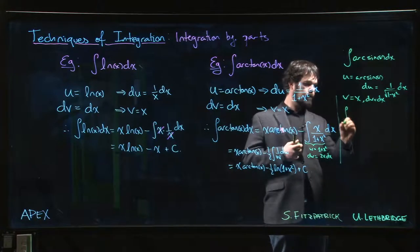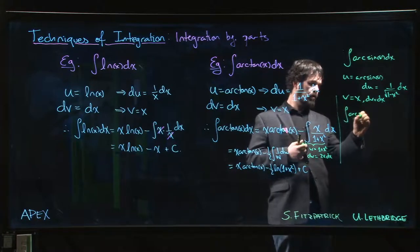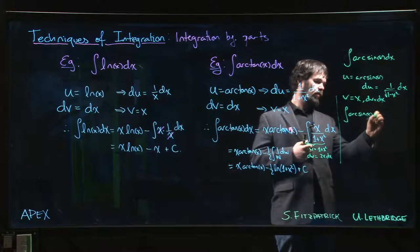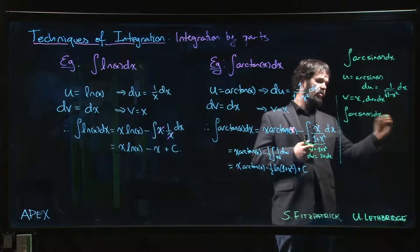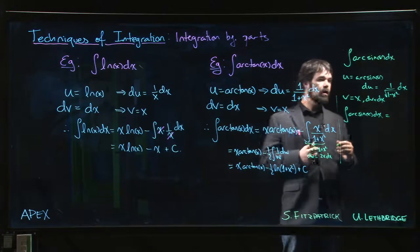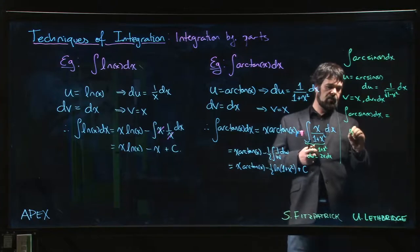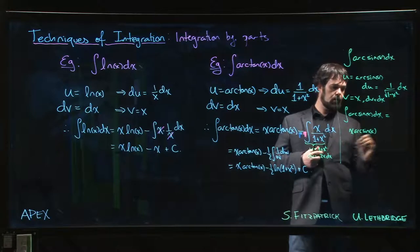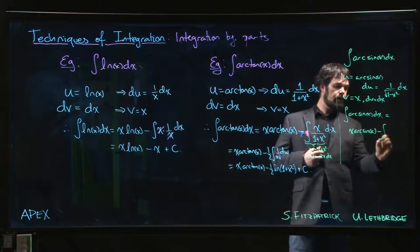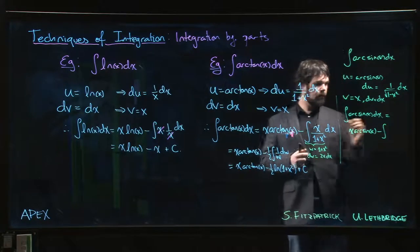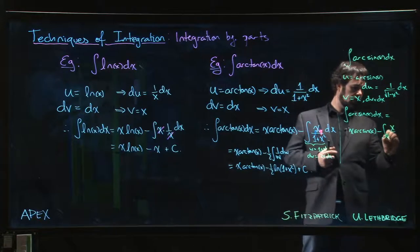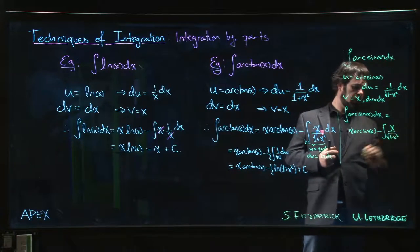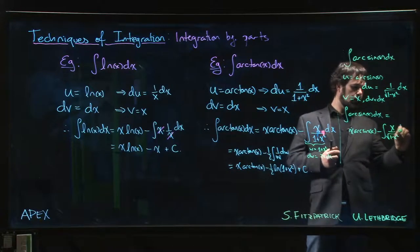And so if I do that, the integral arc sine of x times dx is going to be x arc sine x minus integral x over the square root of 1 minus x squared dx.